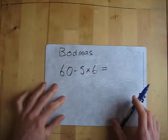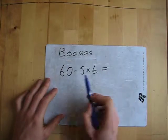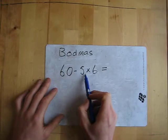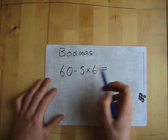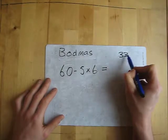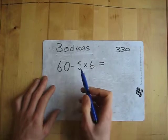So we've got 60 take away 5 times 6. Now a lot of people think you do 60 take away 5, which should be 55, and then times that by 6, which actually gives you 330. But that's not the case, we need to look.